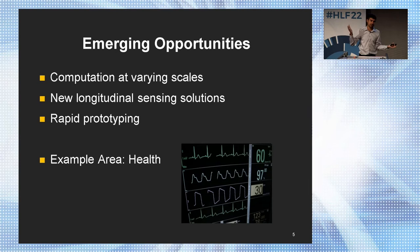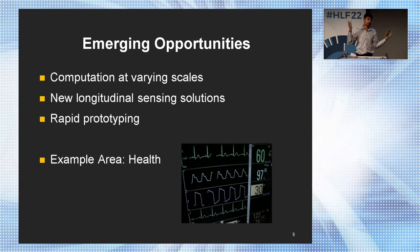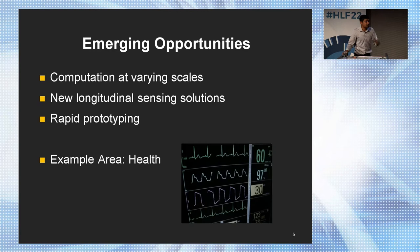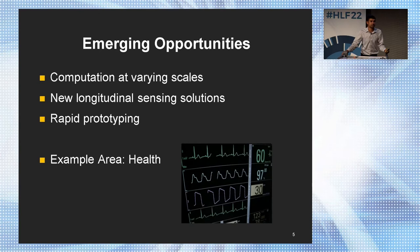With varying scales of computing you can look at new ways to observe the world — the environment, the body, and things around us — in a longitudinal fashion. Instead of just making a snapshot inference, we can observe things over time, which lets us glean insights never possible before. Rapid prototyping means all of us can try these concepts — it's not limited to one university or research lab. I'll talk about examples at varying scales in the health space, looking at the convergence of AI, new hardware, and innovation in healthcare.